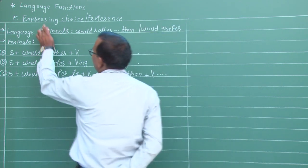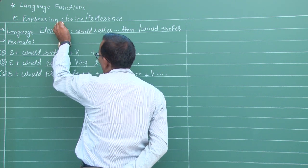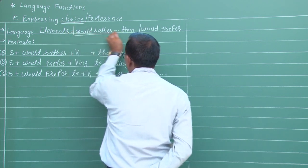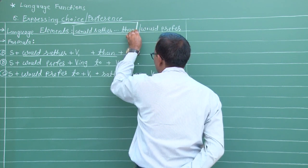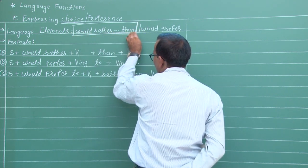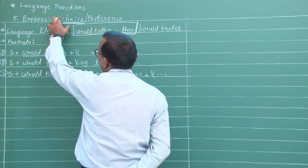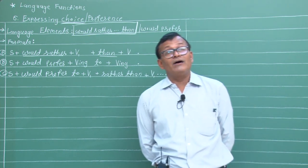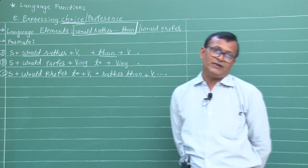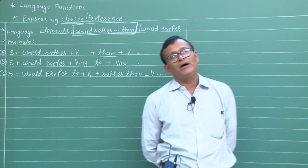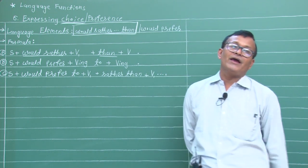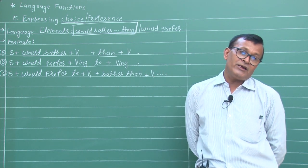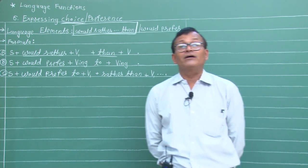અહીંયા વિદ્યાર્થી મિત્રો, Expressing Choice, Showing Choice - આ ટોપિક માં સૌથી મહત્વની બાબત Expressing Choice અને Would Rather Than છે. જ્યારે કોઈ વ્યક્તિ કોઈ કાર્ય કે ક્રિયા કરવા માટેની ઇચ્છા વ્યક્ત કરે છે, ત્યારે આ language function નો ઉપયોગ થાય છે. બે માંથી એક ની પસંદગી - Choice Means પસંદગી કરવા માટે, પોતાની ઇચ્છા વ્યક્ત કરે છે.